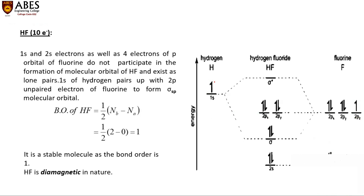Because the energies of H 1s (−13.6 eV) and F 2p (−18 eV) are comparable, and molecules with similar energy and the same symmetry can combine, sp mixing occurs. The pz orbital lies along the internuclear axis, so it forms the sigma bond via sp mixing. The 2s orbital and the 2px, 2py orbitals of fluorine do not participate in bonding — these are called non-bonding orbitals. Bond order = (2 − 0) / 2 = 1, and the molecule is diamagnetic.